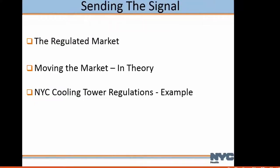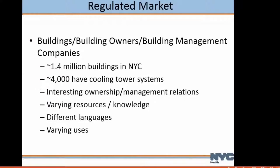Let's talk about our market. There are about 1.4 million buildings in New York City — bigger than a lot of cities' entire population — with about 4,000 cooling tower systems. There are lots of different ownership and management relationships: tenants and owners. The regulation holds the owner of the building with the cooling tower responsible, not a lessee. That's changed how some leases in New York City have been written.